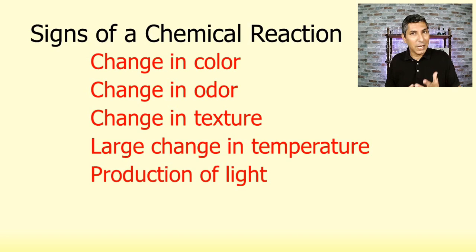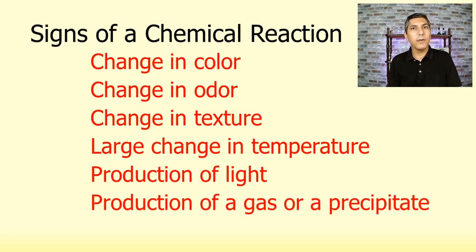Production of light. Sometimes we call that a flame. That's a good sign of a reaction. Sometimes sparks or something like that. Production of a gas. So in the case of burning paper, we'd call that smoke. In some reactions, we also have the production of a precipitate. A precipitate is when you take two solutions and mix them together, and you have a solid that's formed there. That solid that's formed from the mixture of two solutions is called a precipitate. We'll talk more about precipitates later in this course.